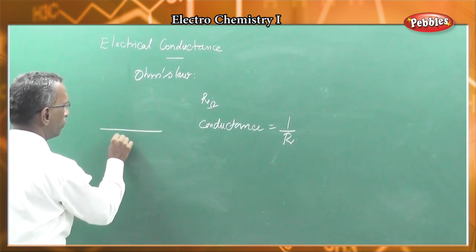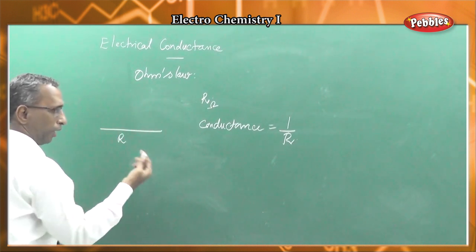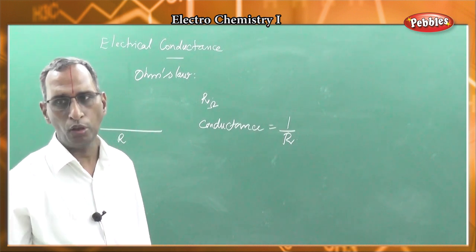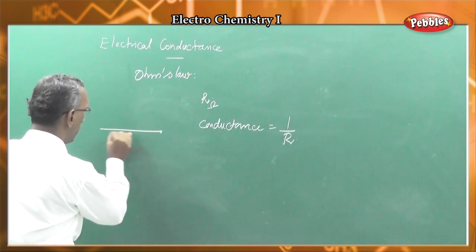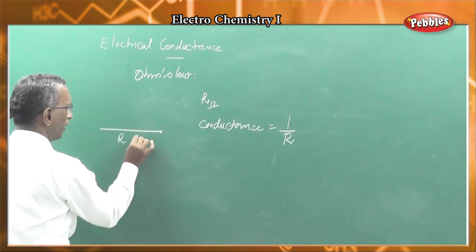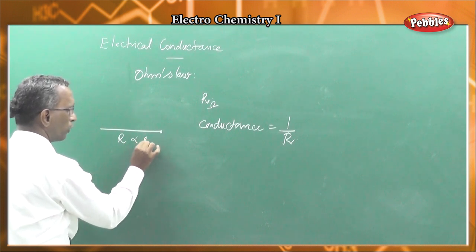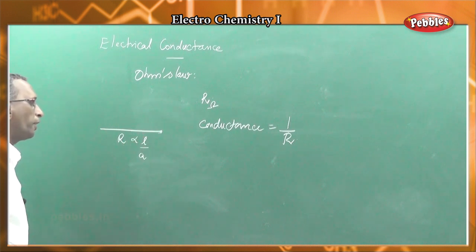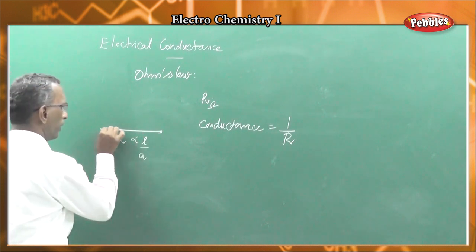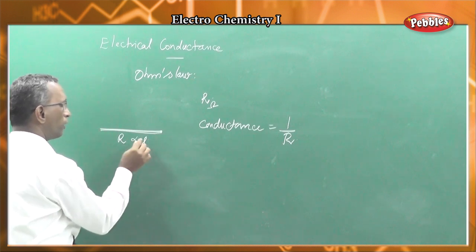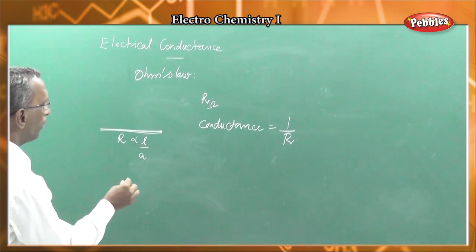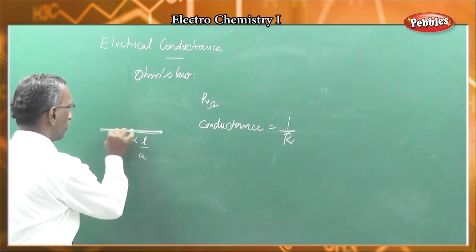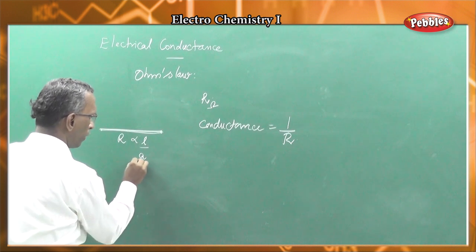In electronic conduction, the resistance of a metallic wire depends on its dimensions. The wire has a cylindrical cross section. The resistance of a wire is directly proportional to the length of the wire and inversely proportional to the area of cross section of the wire. This is electronic conduction.